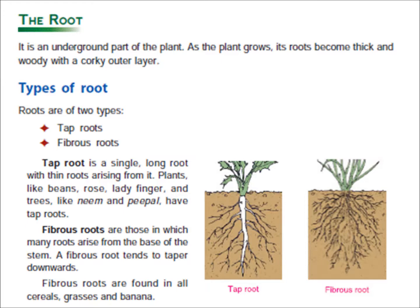I will explain you about the tap root. What is tap root? A tap root is a single long root with thin roots arising from it. Some plants have only one main root which grows from the end of the stem into the soil, and many small roots grow from this main root — this main root is called the tap root.